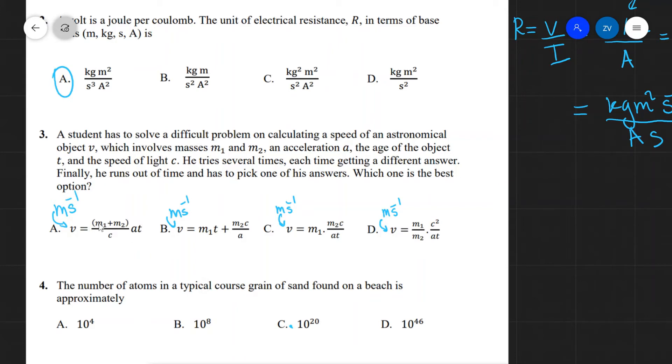Why is that? Because m1 plus m2 is going to give us kilograms. There's nothing to cancel out those kilograms. So it'll be kilograms multiplied by the units of acceleration, multiplied by time, divided by the speed of light.